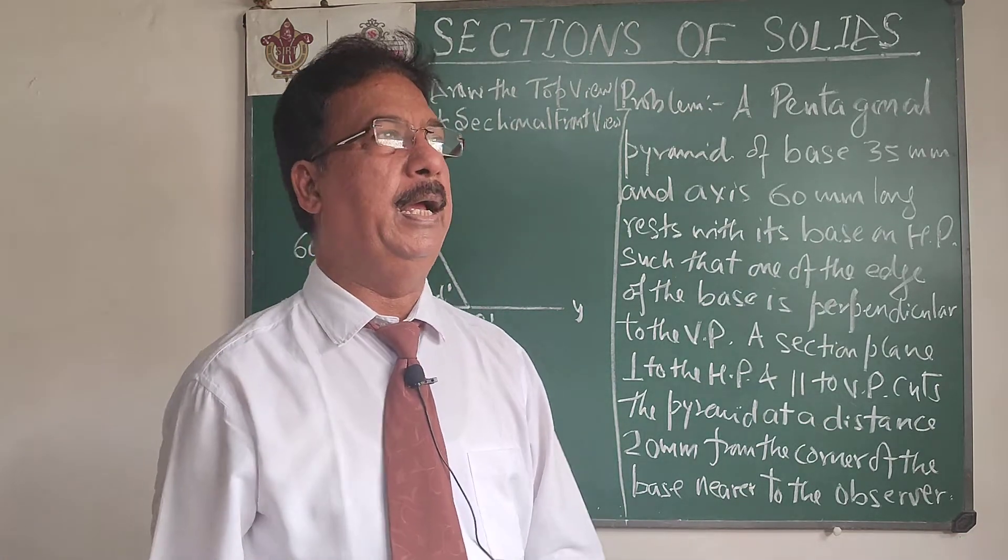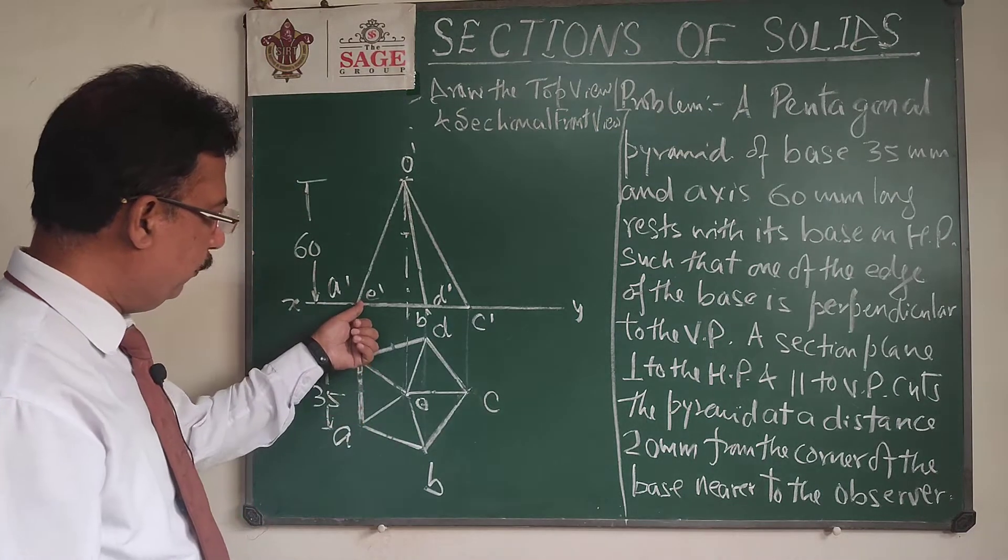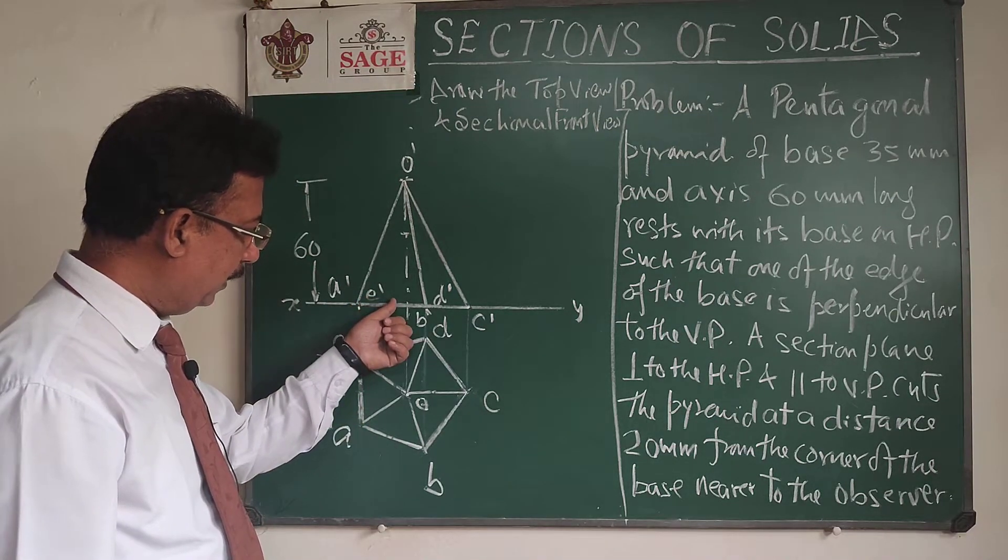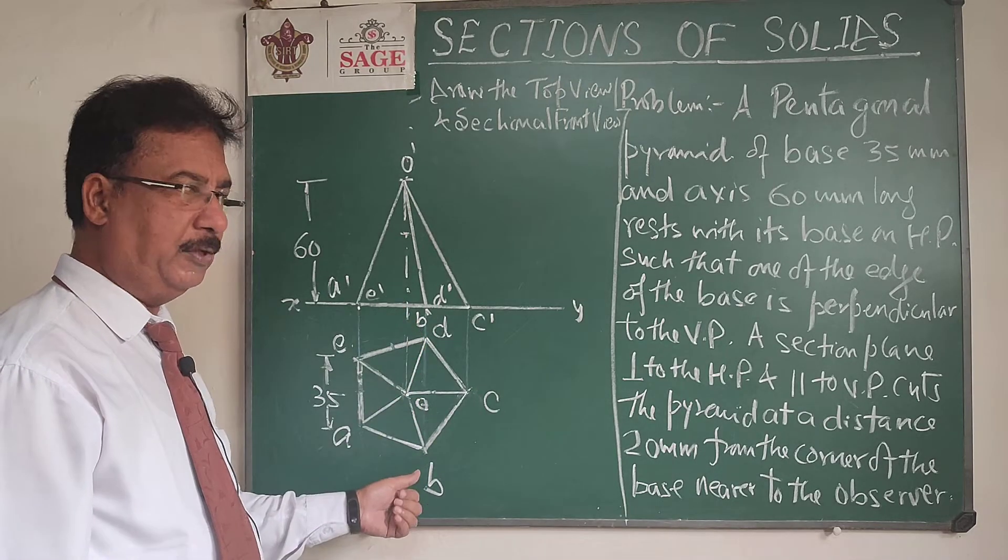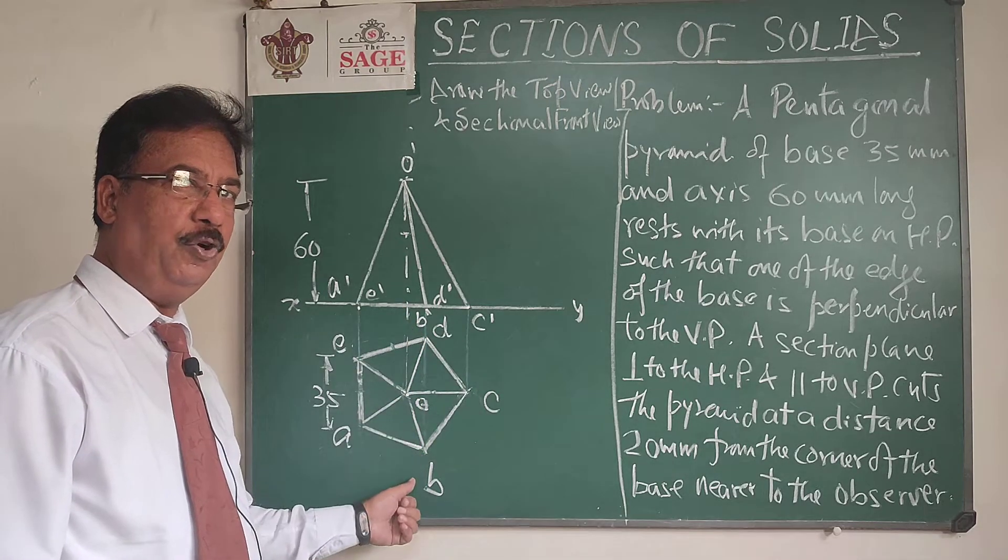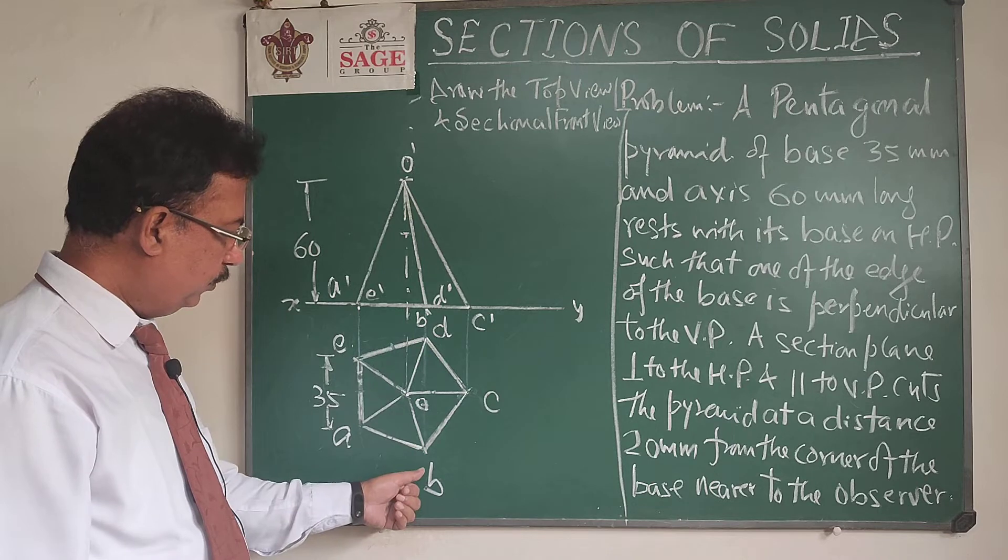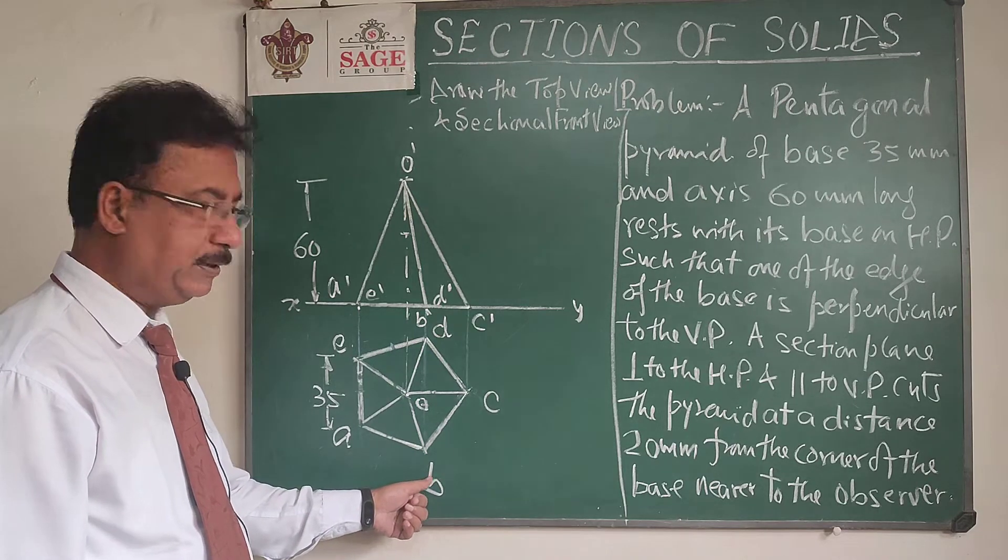And as you know in the top view, if we look that distance, that away part will be the side of the observer. As the observer will be, the object will be between the observer and the plane. So this point will be nearer to the observer, that is the point B.